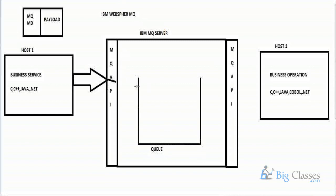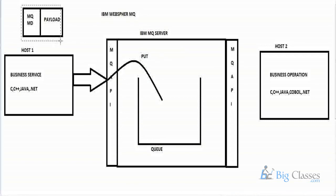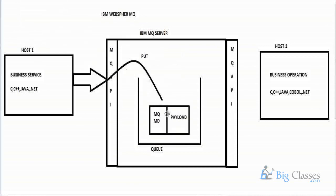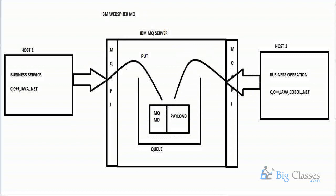The source program connects IBM MQ server, it opens the business Q, then it performs a put operation — which is nothing but a write. The source program writes business data as a message on the Q. The remote service, when it connects IBM MQ server, performs a get operation on the business Q — that is nothing but a read. One program writes data on IBM MQ server, one program reads data. A bundle of messages arrives on IBM MQ server and those messages are forwarded to the remote service.